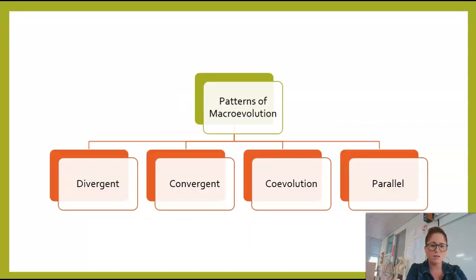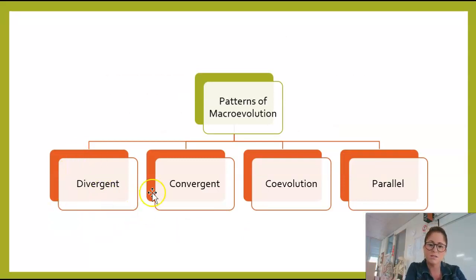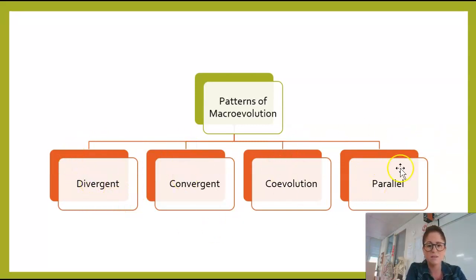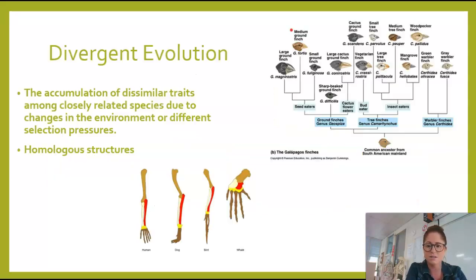There are four patterns of evolution that you need to know about in this course: divergent, convergent, coevolution, and parallel evolution. You've likely spent some time in the past talking more about divergent and maybe even a little bit about convergent, but coevolution and parallel evolution might be a bit new for you. So we'll go into each of these in detail.